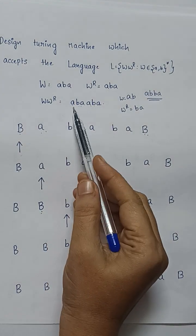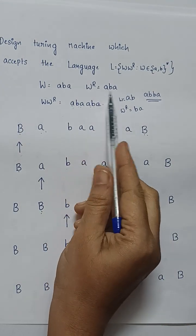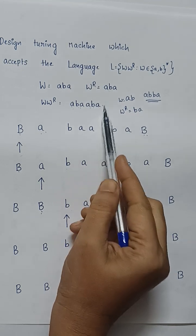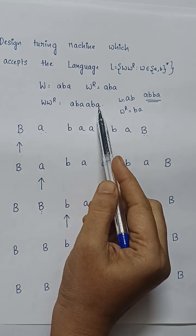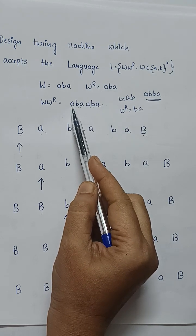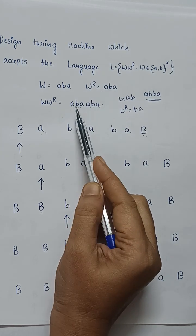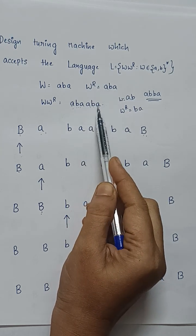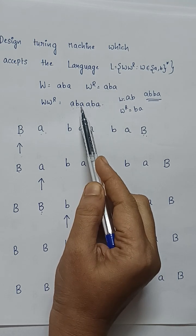In this string, we have taken w equals to aba. The reverse of this is aba, so together we are taking the string as aba aba. The Turing machine should work in such a way that the first symbol 'a' means the last symbol should be 'a', the second symbol 'b' means the last-but-one symbol should be 'b', and the third symbol 'a' means the last third symbol should be 'a'.